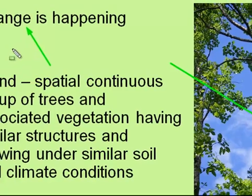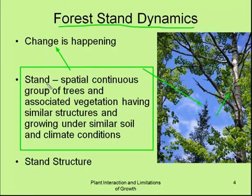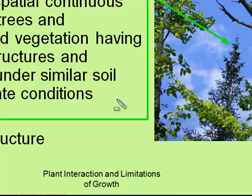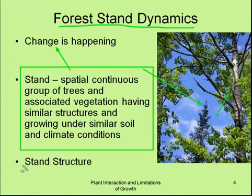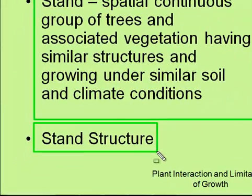The first thing we want to do is look at the definition of a stand. A forest stand is a spatially continuous group of trees and associated vegetation having similar structures and growing under similar soil and climate conditions. For example, a forest stand up north in the Boreal Forest on a sandy site may be a mixture of jack pine and poplar with an understory of bunchberry and some ferns. And within that stand, there may actually be different stand structures — a young jack pine stand of 40 years would have quite a different stand structure compared to a jack pine stand of 120 years, and those things all influence how trees respond to growth.